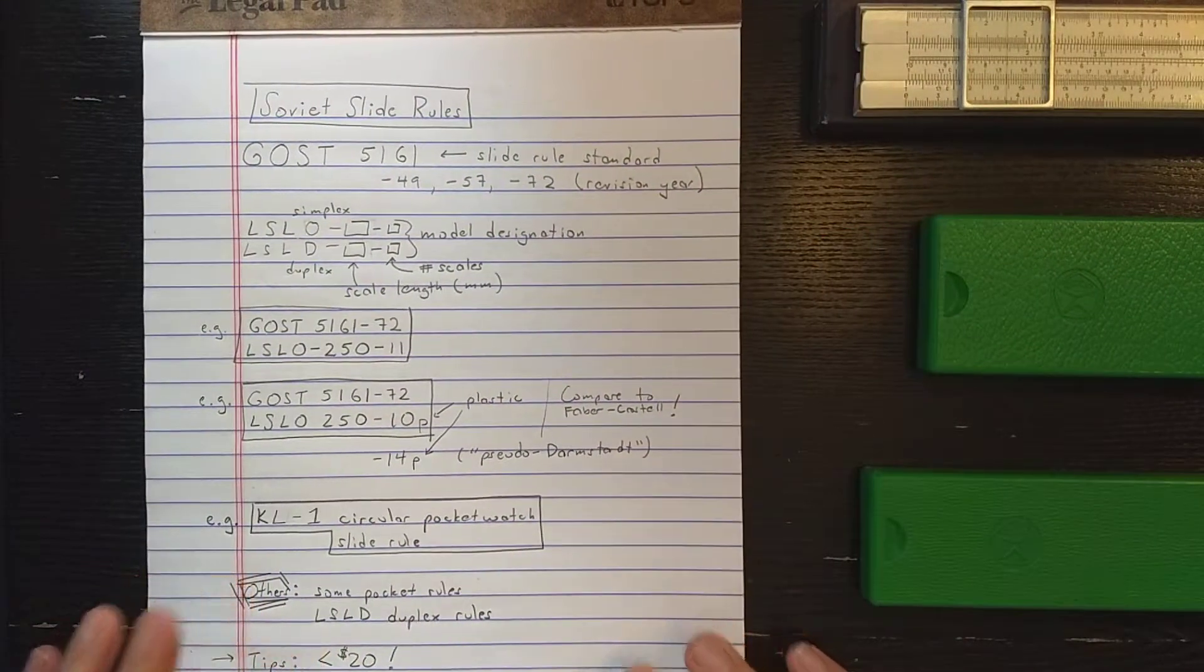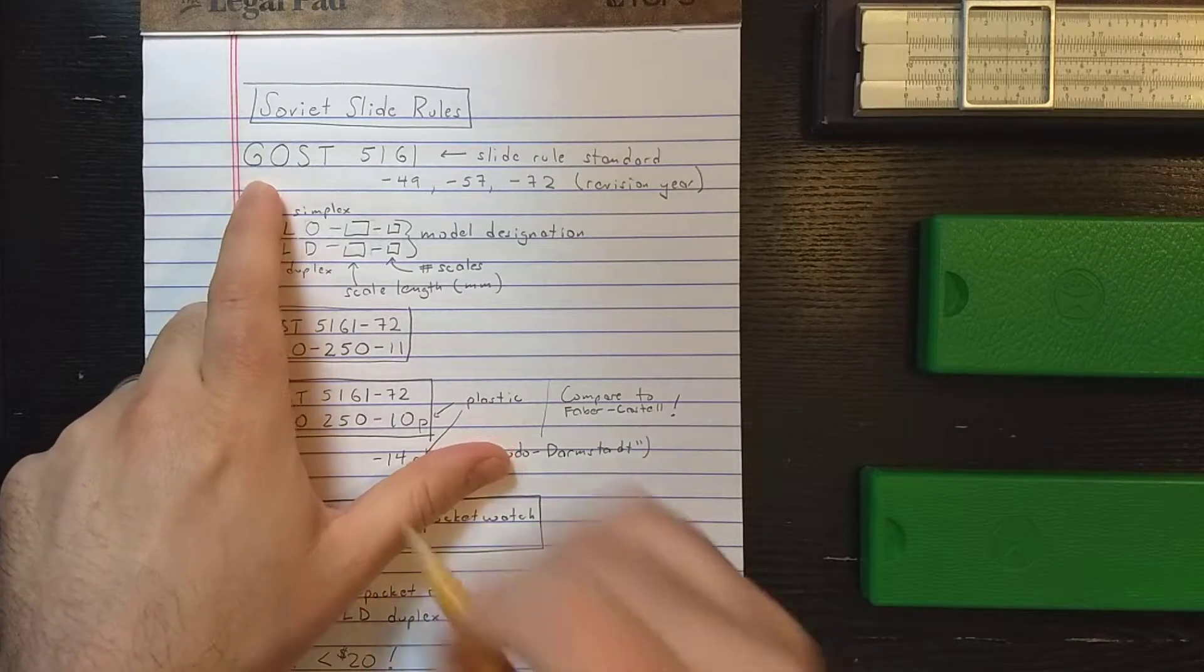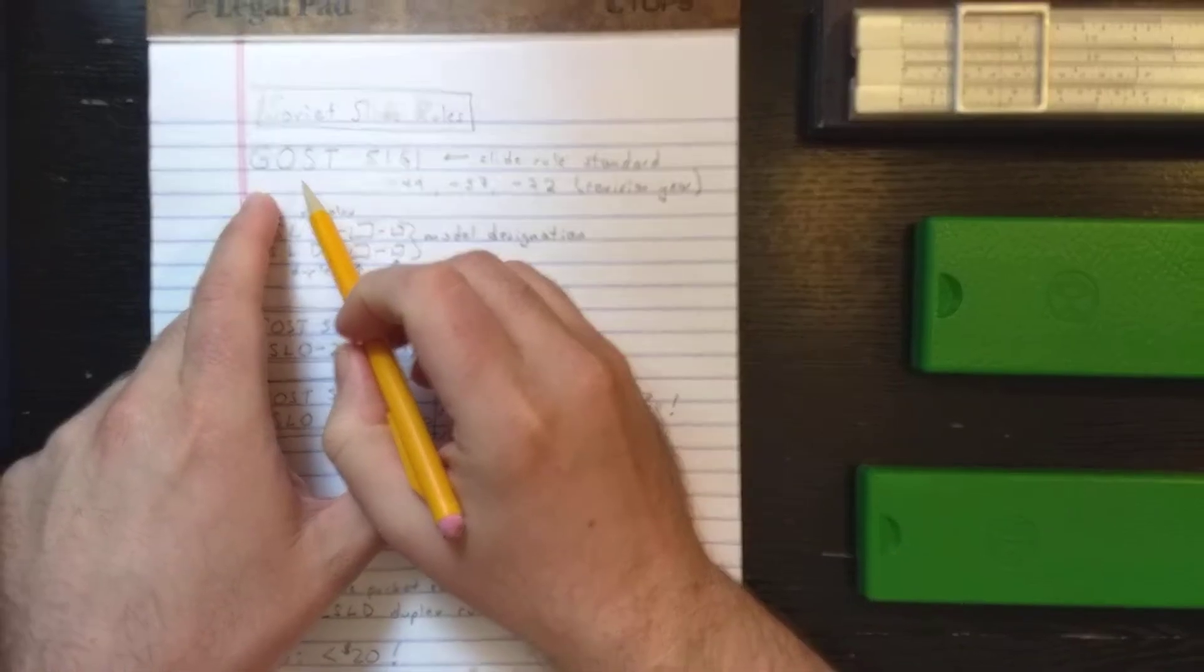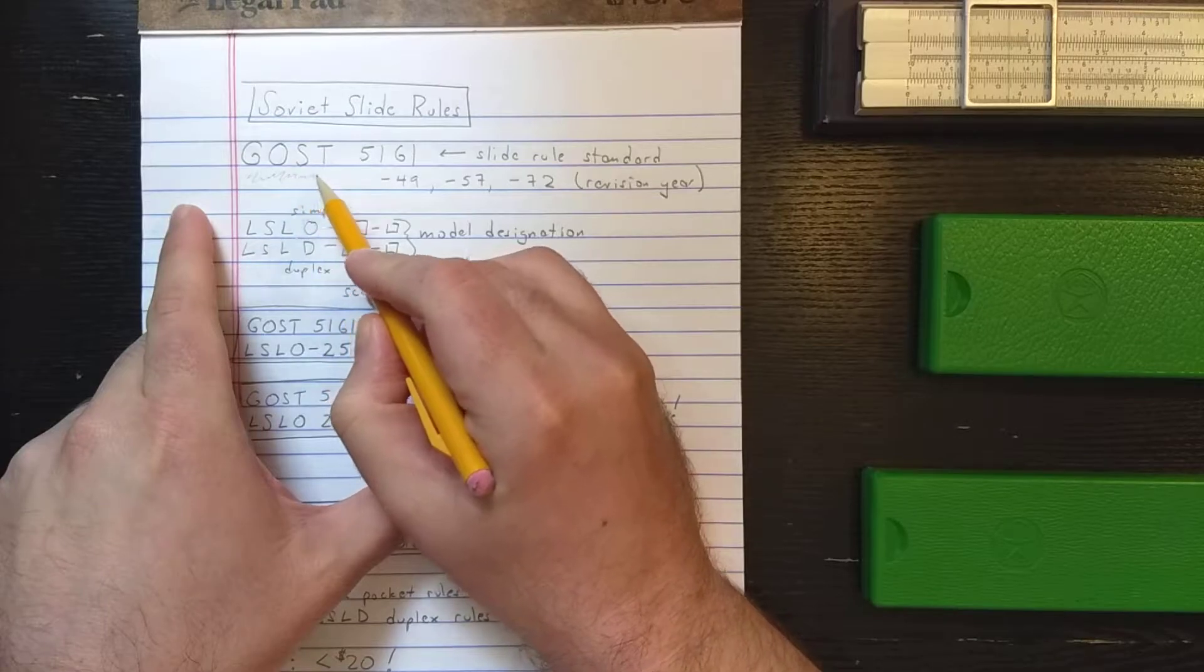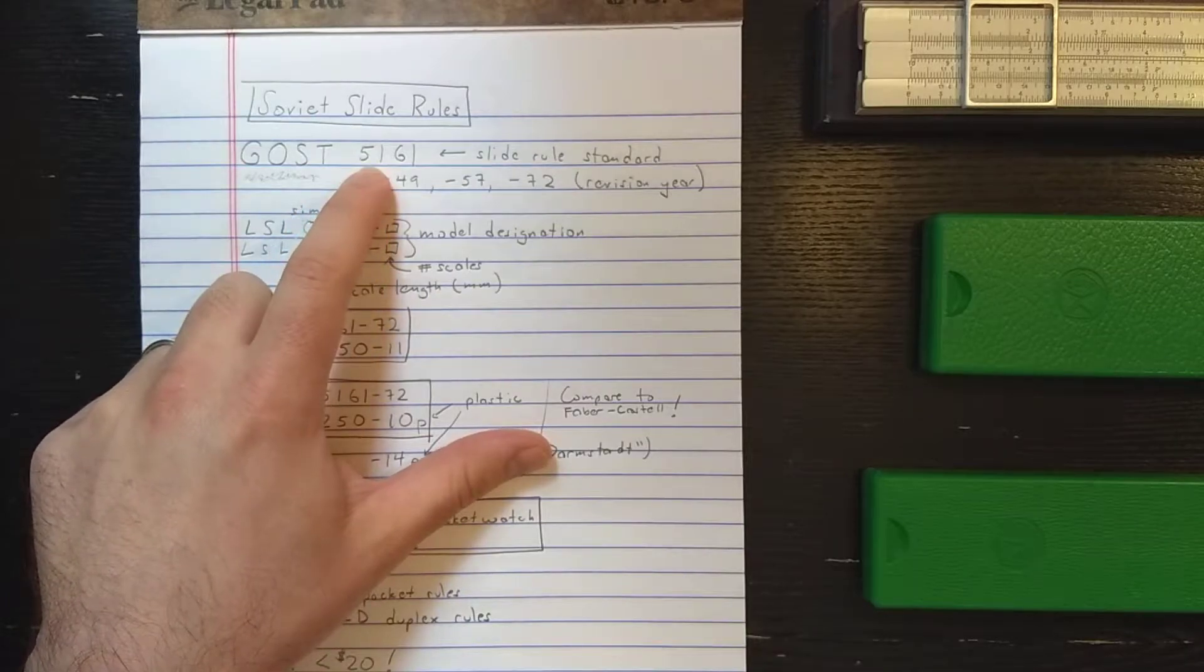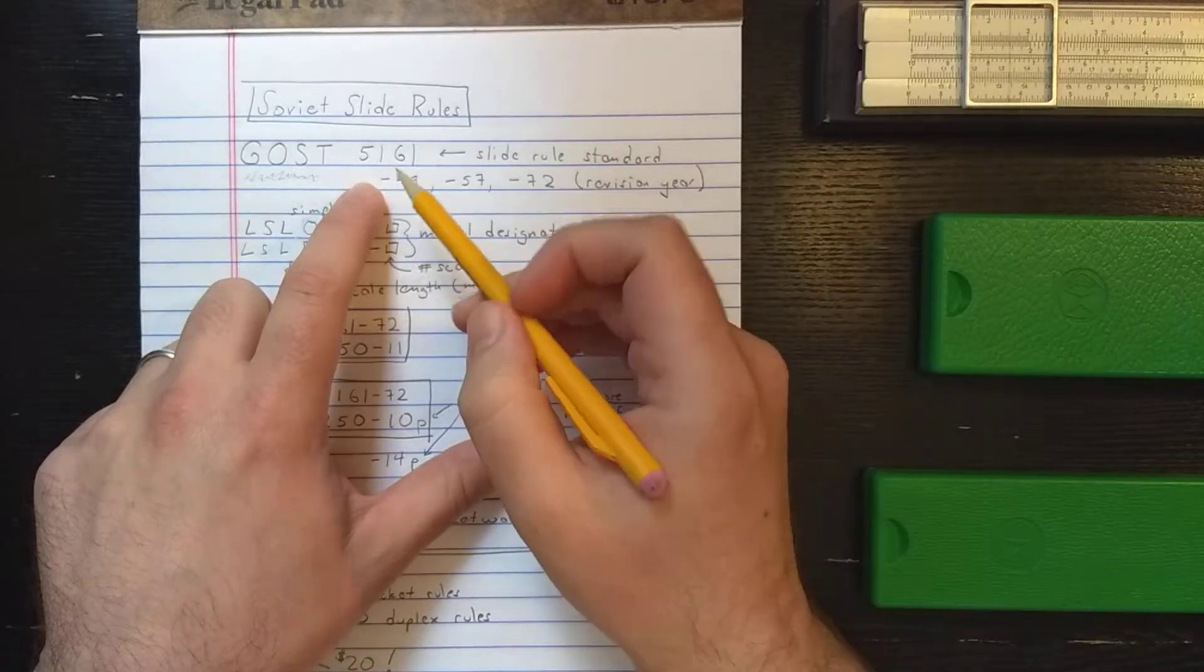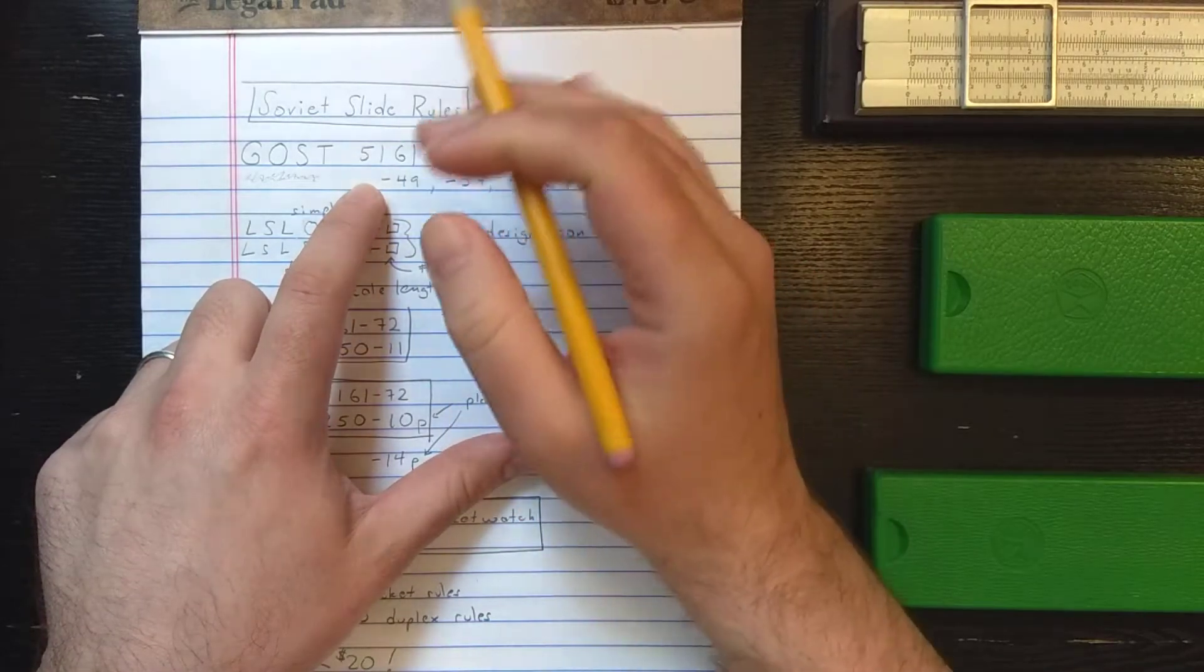When you're looking at Soviet slide rules, you're going to see GOST 5161. This means like a standard, like ANSI or something like that for Russian slide rules. It's 5161, which is their linear slide rule standard. You'll see that dash some number, which is the revision year of the standard.